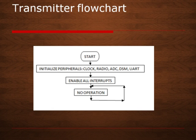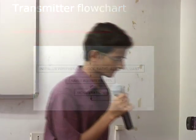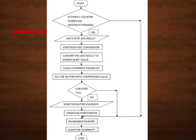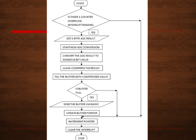This is a flowchart for the main function of the transmitter: we initialize all peripherals, enable all interrupts, and then it enters an infinite while loop — the rest of the processes happen in the ISR. In the ISR flowchart: first we check if any interrupt is pending, then get 2 bytes of ADC result, start a new ADC conversion, convert the ADC result to signed 16-bit values, compress using the I²S co-processor with mu-law compression, and fill the compressed result in the buffer. The buffer has cells of 1 byte and a total size of 15; the first cell holds the buffer size, so we send 14 audio samples per buffer. Once the buffer is completely filled, we send it via radio within the ISR itself.